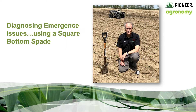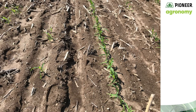Hi, this is Gary Brinkman, pioneer agronomist in central Michigan. Today I'd like to visit with you about diagnosing emergence issues using a square bottom spade. I'm frequently asked to come out to growers' fields to evaluate the outcome of their planting efforts.